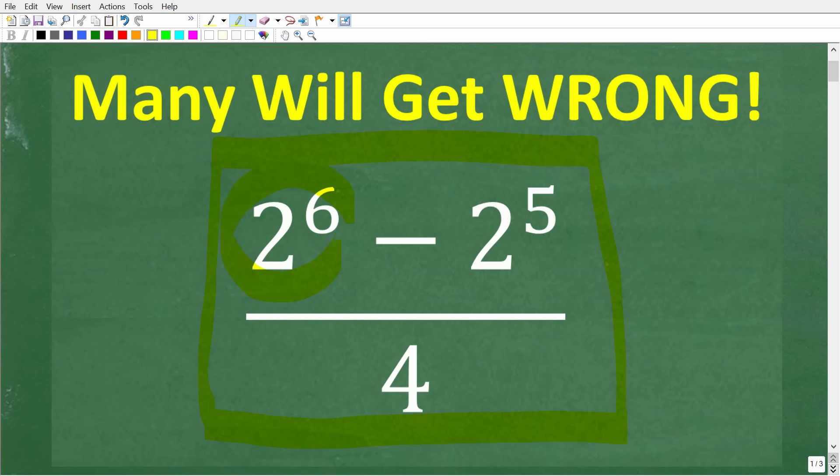So we have 2 to the 6th power minus 2 to the 5th power, all of this over 4. Now if you think you know the answer, put that into the comment section. I'm going to show you the full solution in just one second.